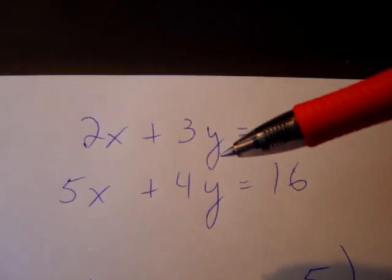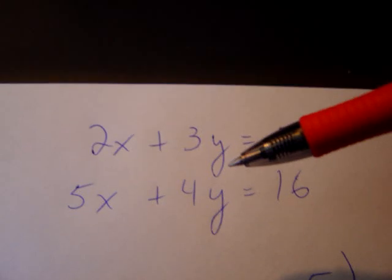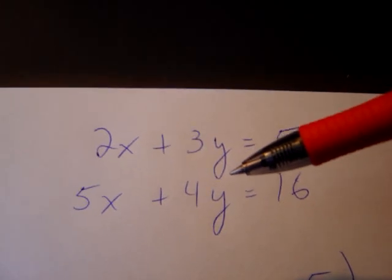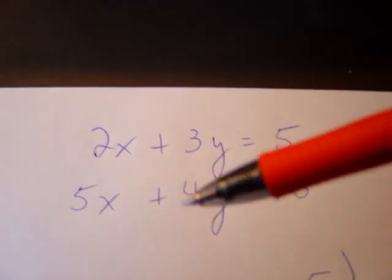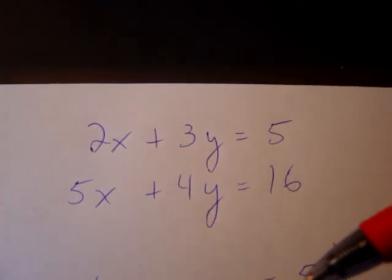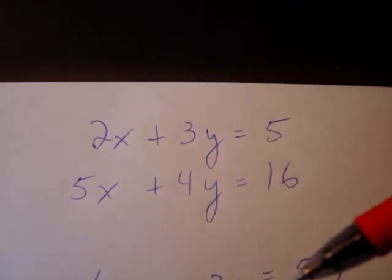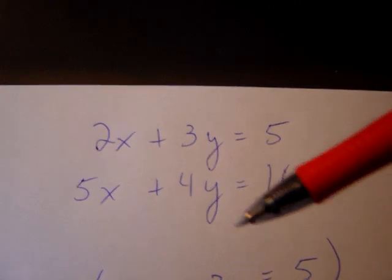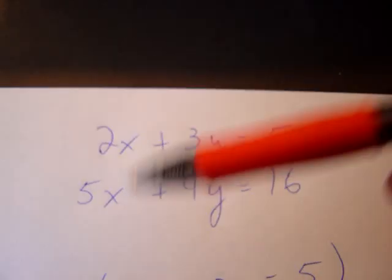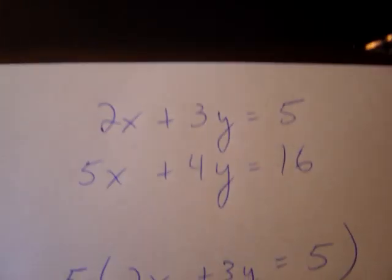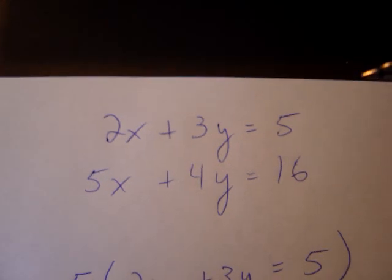So we need to find a least common multiple. In other words, we need to find the smallest number that both coefficients divide into, and it's just up to you. You can decide which term you want to get rid of, either the x term or the y term. In this instance, I'm going to choose to get rid of the x term.